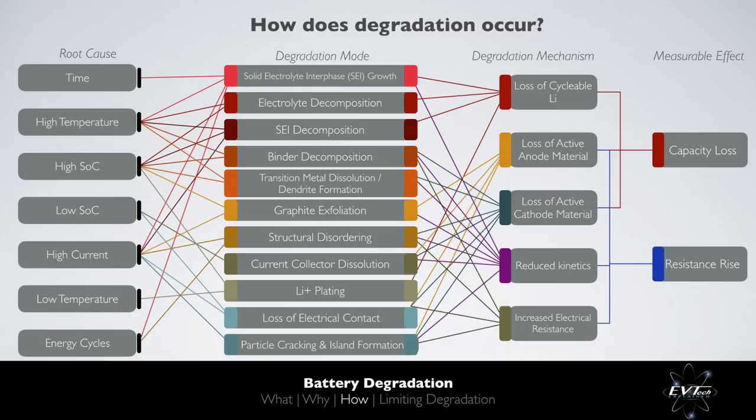Loss of cyclable lithium, anode active material, and cathode active material all result in measured capacity loss. Loss of anode and cathode active materials, reduced lithium-ion kinetics, and increased electrical resistance all result in an increase in measured cell resistance.